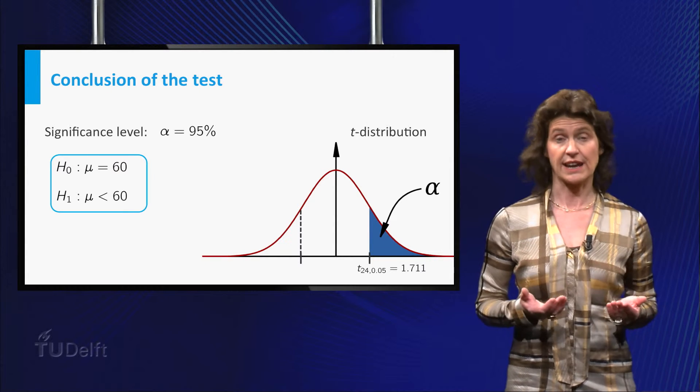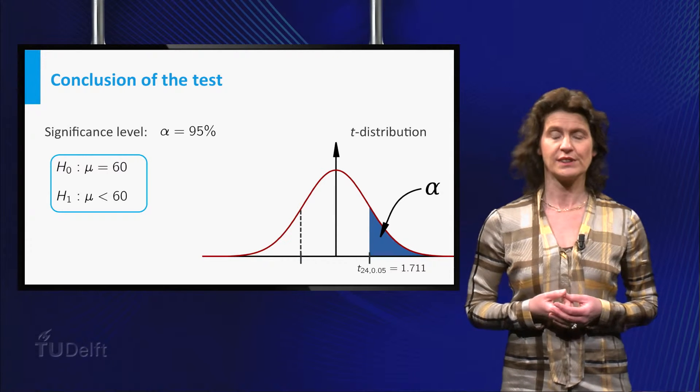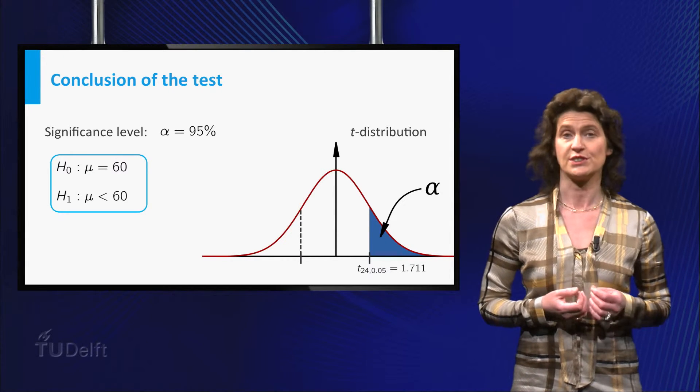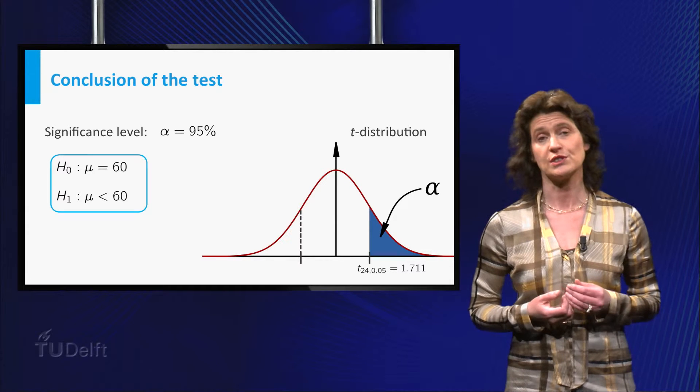Because the test is one-sided, you need to take the critical value of the t24 distribution at alpha equals 0.05.